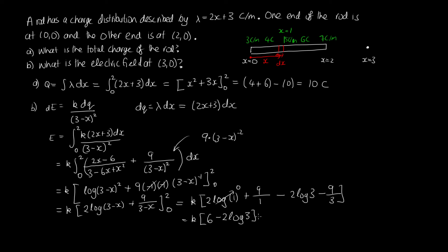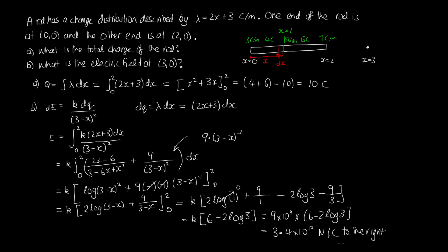We can now evaluate this. With k equal to 9 times 10 to the 9, we compute 9 times 10 to the 9 times (6 minus 2 log 3), where log is the natural logarithm. This gives approximately 3.4 times 10 to the 10 newtons per coulomb to the right, or rounded to one significant figure, 3 times 10 to the 10 newtons per coulomb to the right, since the positions were given to one significant figure.